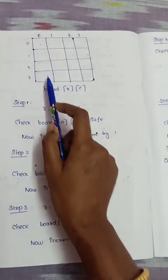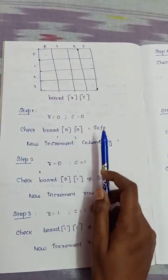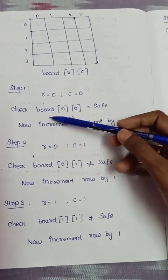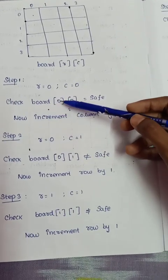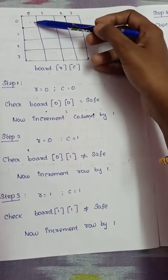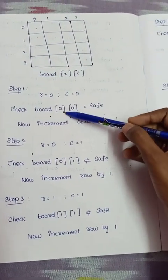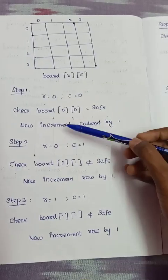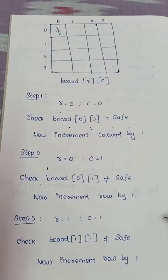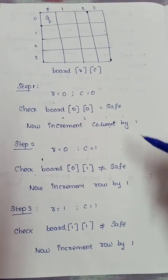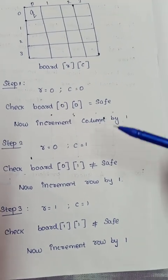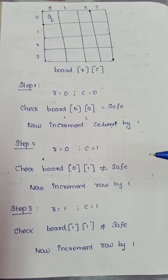Step 1: we start at position row 0, column 0. We check if board[0][0] is safe. If it is safe, we place the queen there and proceed.